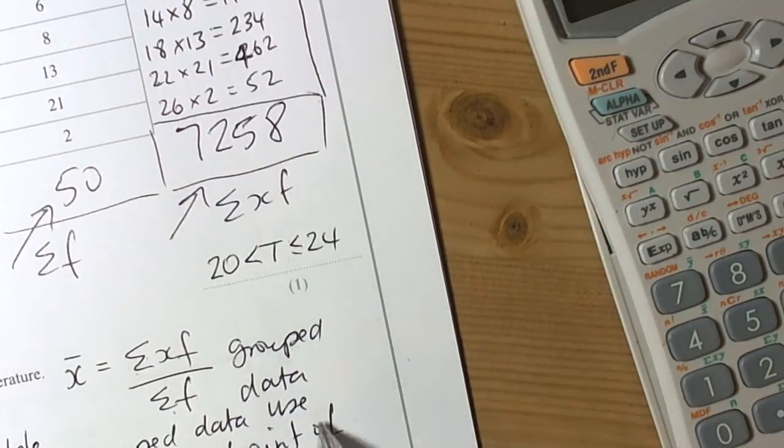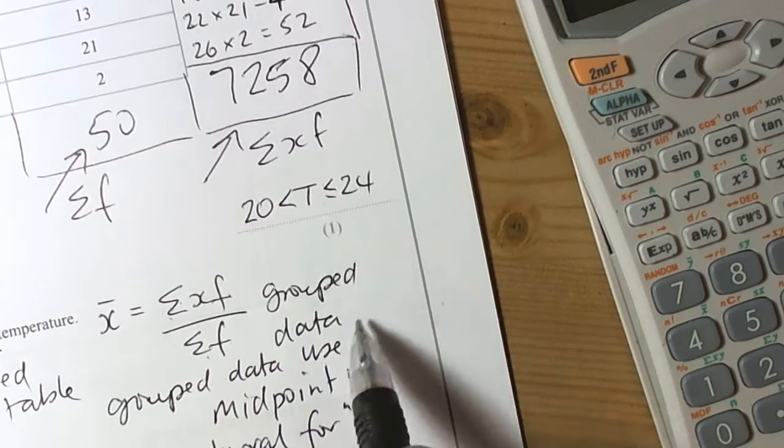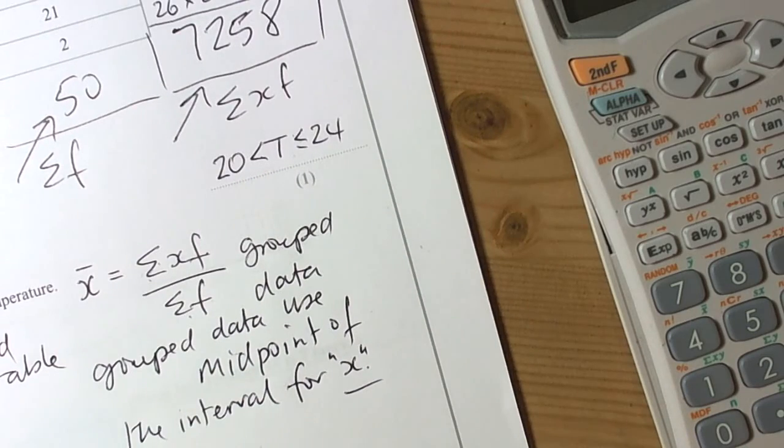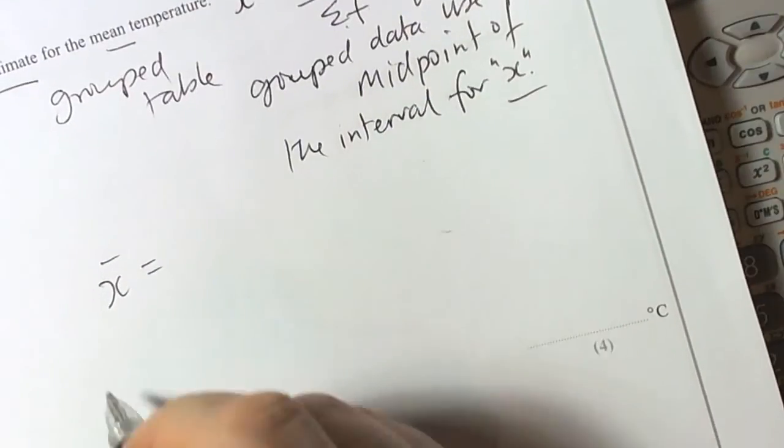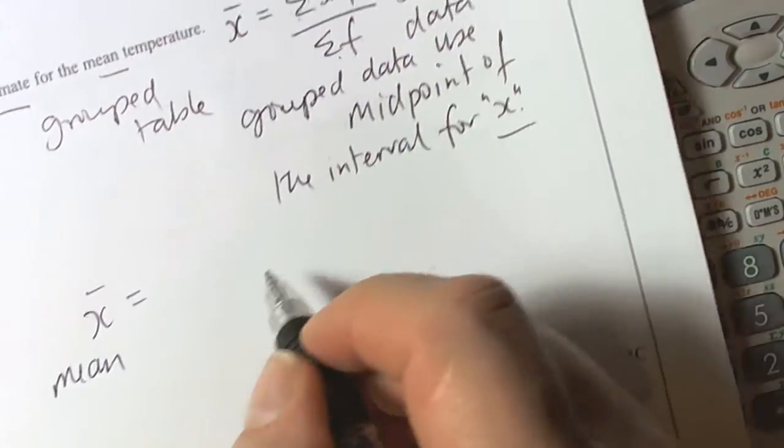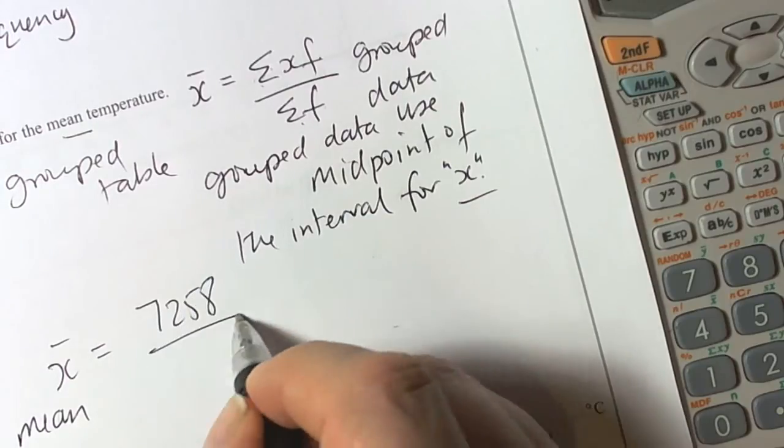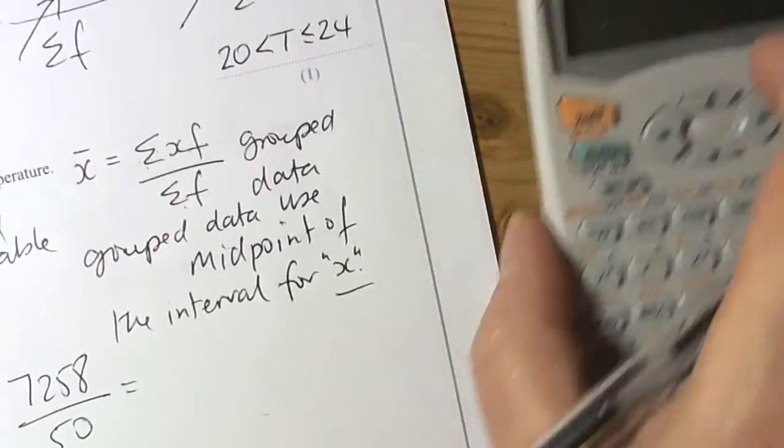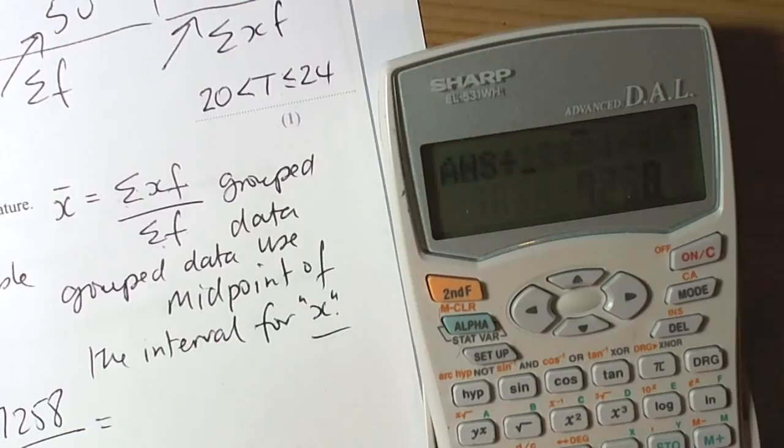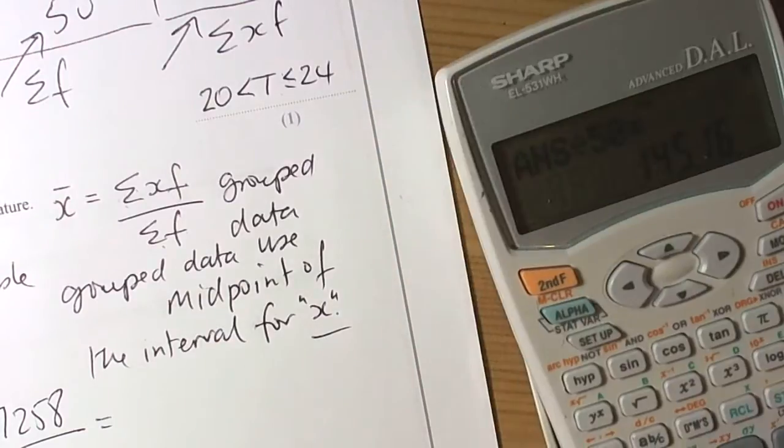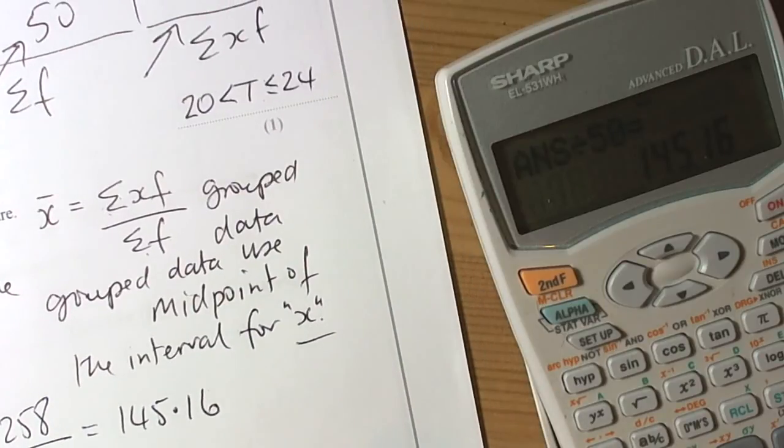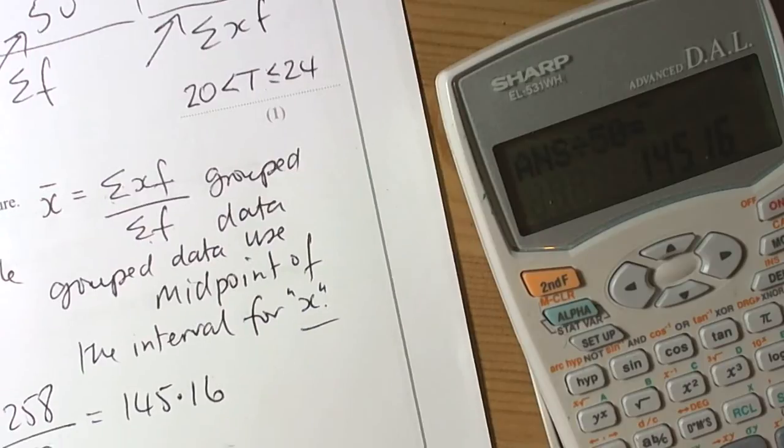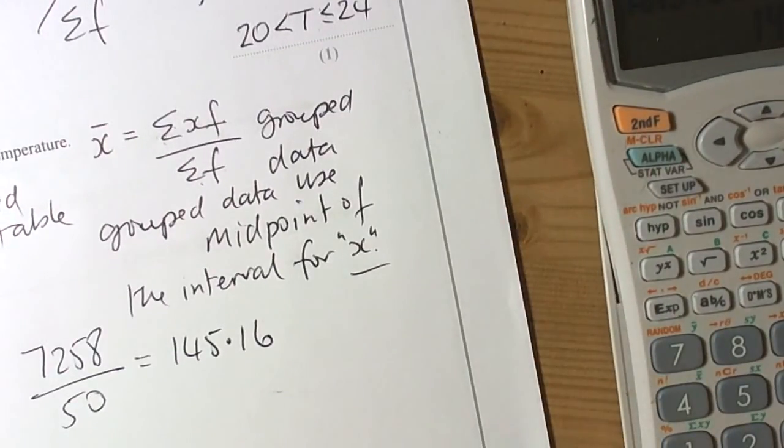And the table told us in the information here that we're talking about 50 days, but we should add that up and just check it. So that's going to be the sum of the frequencies, the total of the frequencies, and this is going to be the total of our xf's, the midpoint times the frequency. So the mean is going to equal, that's a symbol that we use for the mean, so the mean is going to be equal to 7258 divided by 50, which equals 145.16.